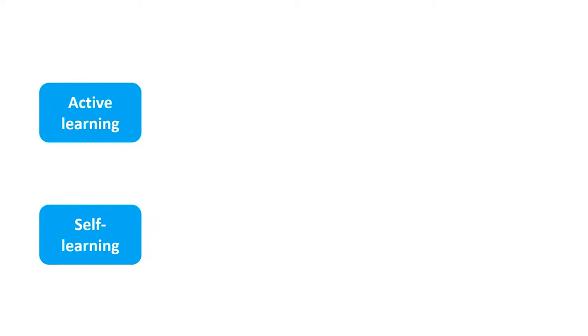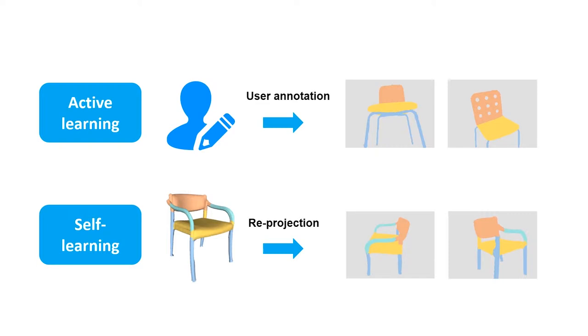The active learning is an iterative process, where the frames that should be labeled by the users are strategically selected to minimize the amount of required annotations. The self-learning makes use of the reconstruction to transfer labels to unlabeled data and provide extra training data for the network.